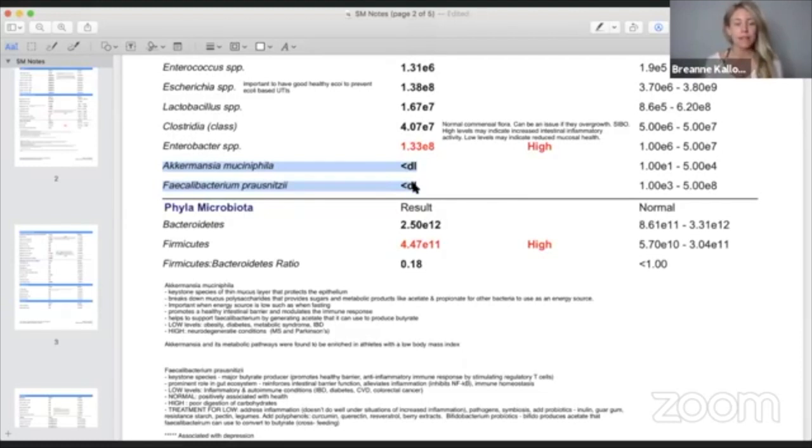Akkermansia muciniphila - mucin means mucus, philia means loving. What Akkermansia does is it degrades the mucus in your digestive tract. There's a mucus layer lining your intestine and Akkermansia is like a pac-man. It breaks it down and utilizes the mucus as a fuel source. In utilizing the mucus, it secretes byproducts acetate and propionate. These are like crumbs when Akkermansia eats. It produces these little crumbs which other bacteria can use as a fuel source when they don't have food coming in, such as during an overnight fast.